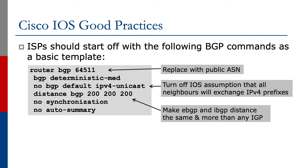For Cisco IOS, you'd set up a BGP template with your AS number. You would configure deterministic MED — as we've covered in the attribute presentation — to make BGP behavior on Cisco IOS the same as for other vendors.